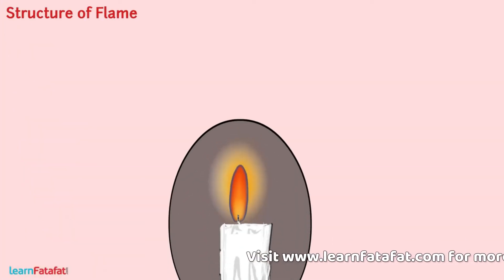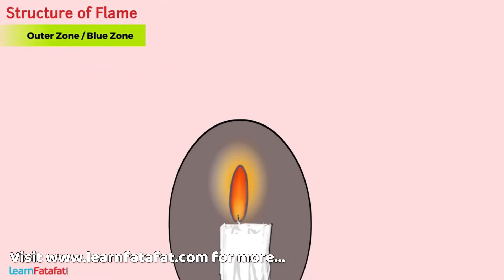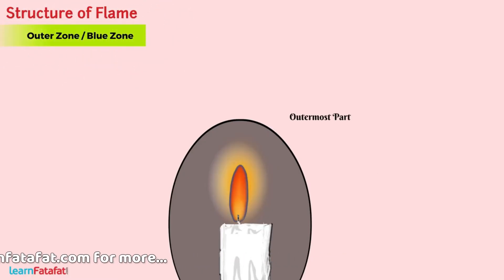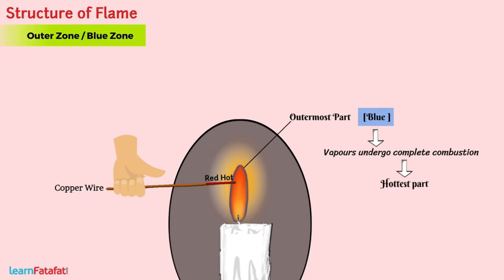Let's now understand the structure of flame produced by a candle. Outer zone or blue zone — the outermost part of the flame having blue color constitutes this region. If we insert a copper wire in the flame, then the region of wire just outside the flame becomes red hot, because in this region vapors undergo complete combustion. Therefore, it is the hottest part of the flame.